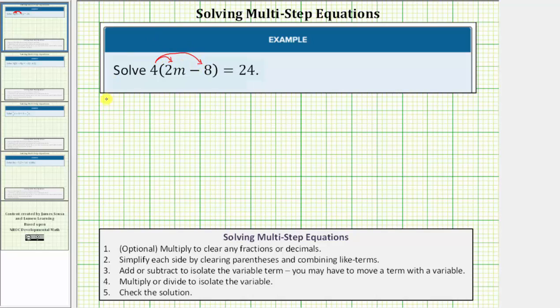So distributing we have four times two m minus four times eight equals 24. Four times two m is eight m and four times eight is 32. So the left side simplifies to eight m minus 32 equals 24.